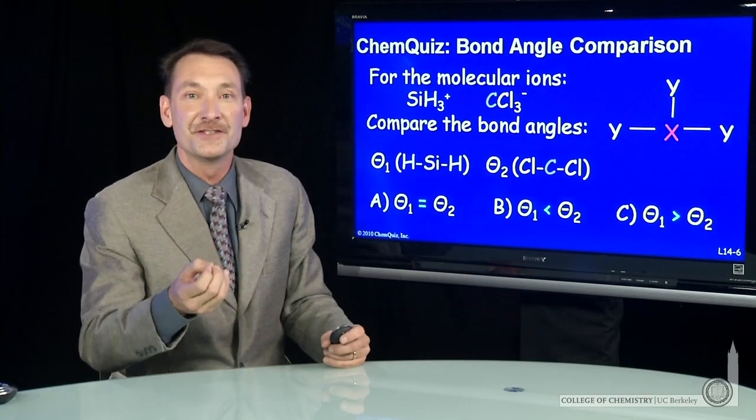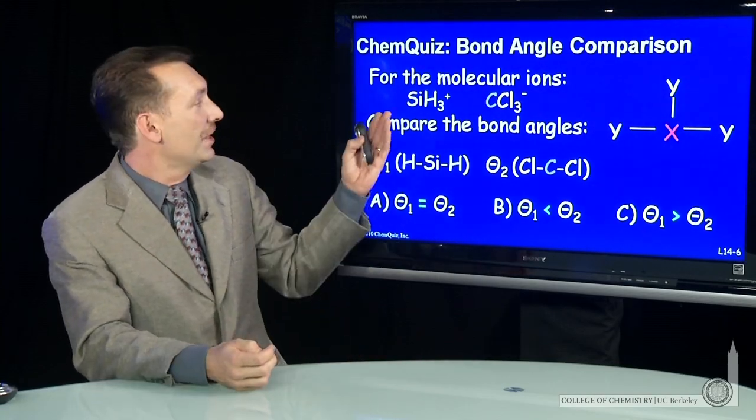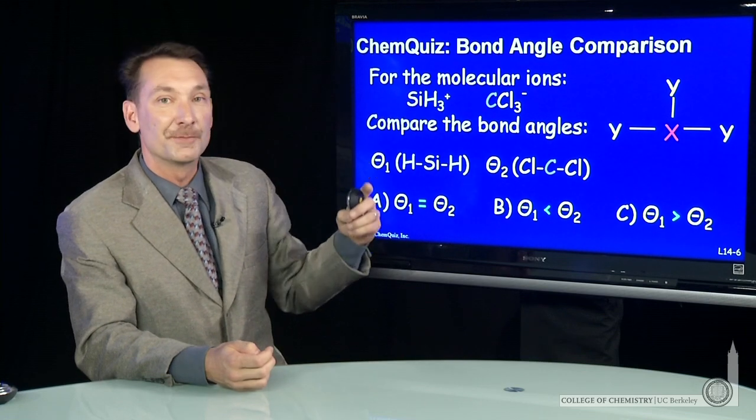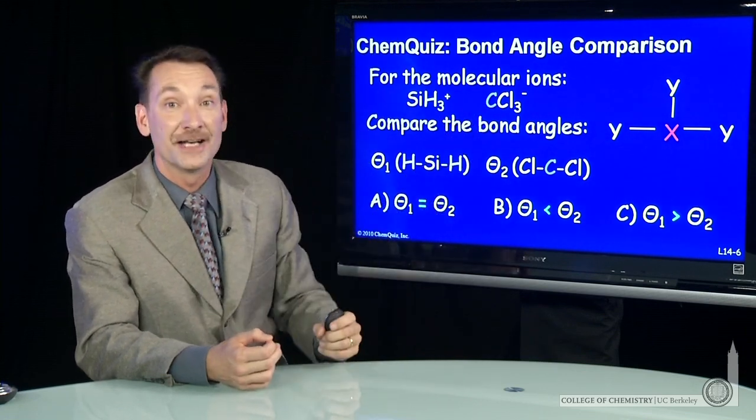Let's look at some simple examples and determine some bond angles. So here's two cases: SiH3+ and CCl3-.